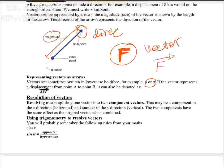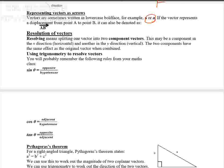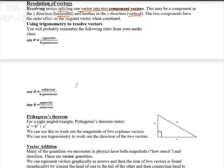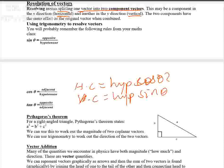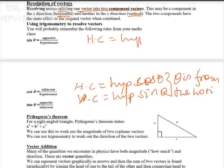The next topic is resolution of vectors, or resolving a vector. Resolving means splitting — we can split a single vector into two components: the horizontal component and the vertical component. Using trigonometry, if the angle theta is measured from the horizontal, the horizontal component equals hypotenuse times cos theta, and the vertical component equals hypotenuse times sine theta.